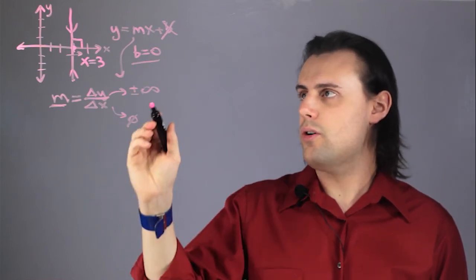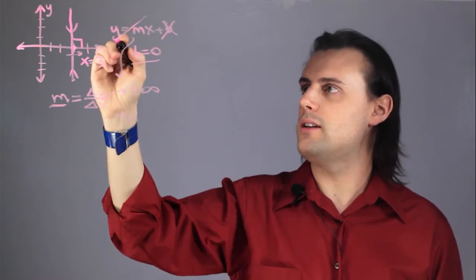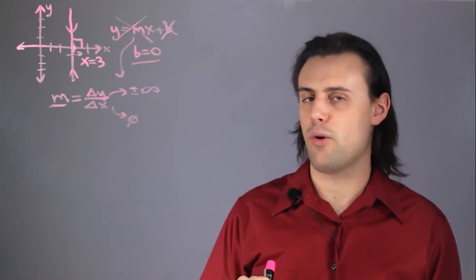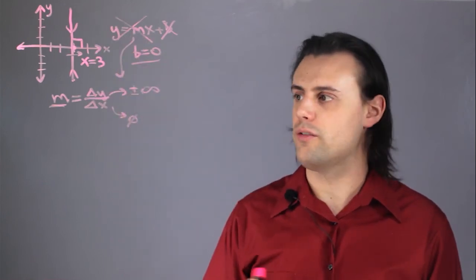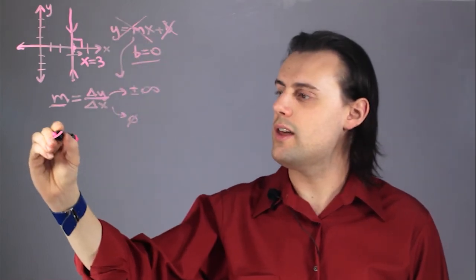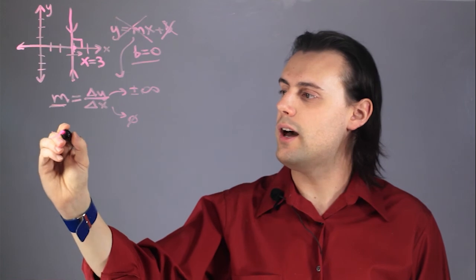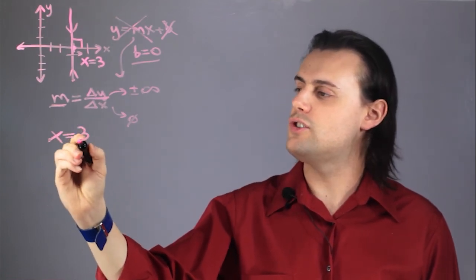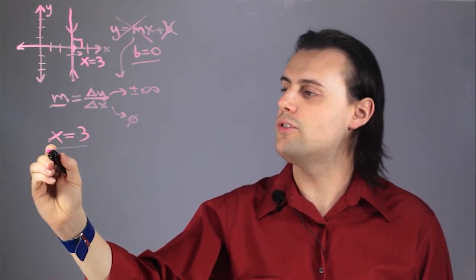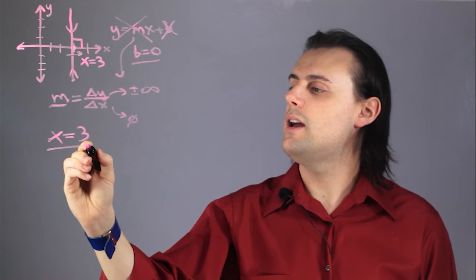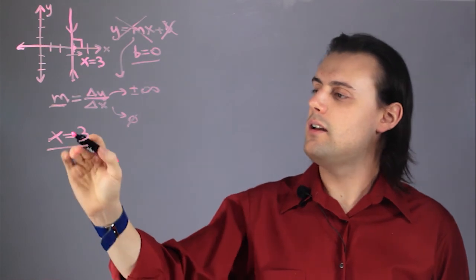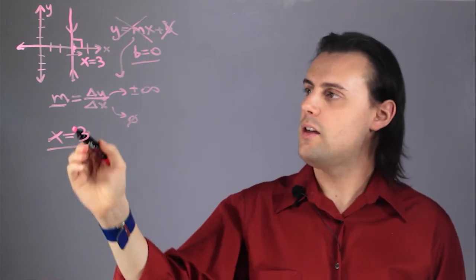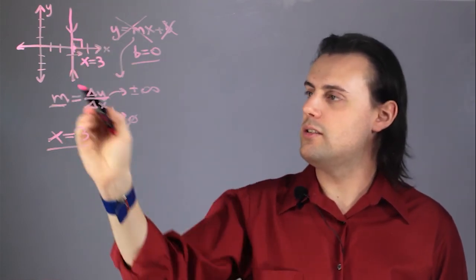In short, you cannot write a slope equation for a vertical curve. You can just say that a vertical line or curve exists at position x equals 3, and that if the domain is just the single point, the range is infinite.